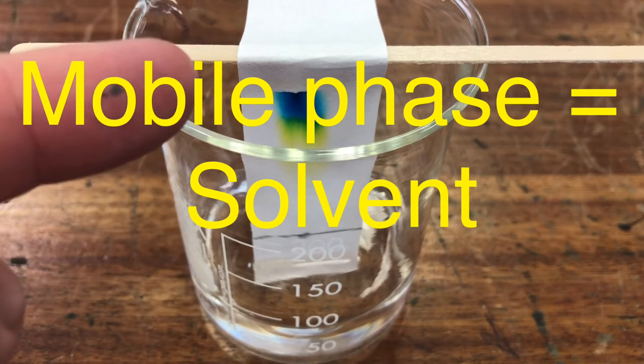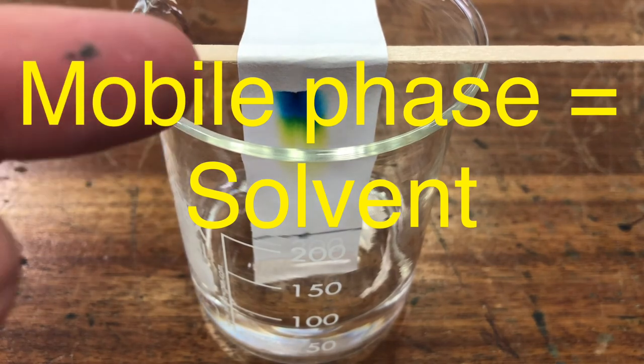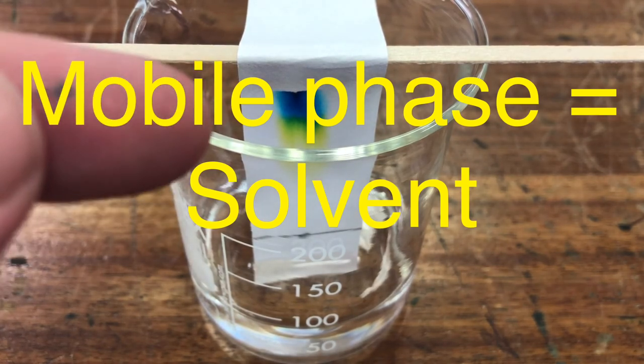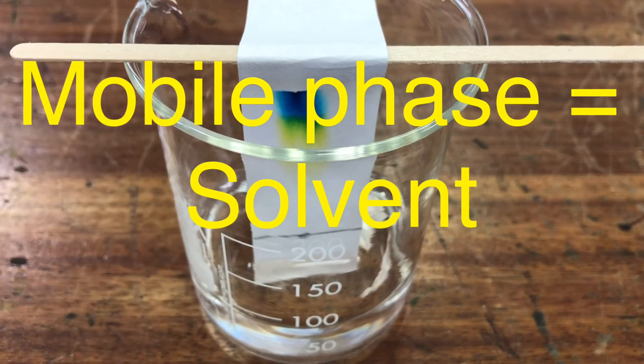The mobile phase is the thing that moves. That's what mobile means, like a mobile phone is a phone you can move around with. So the thing that's moving up the piece of filter paper, or moving up the stationary phase, is the solvent.